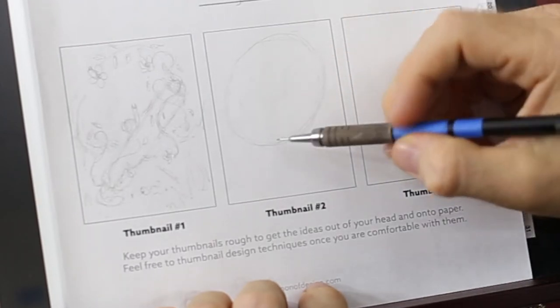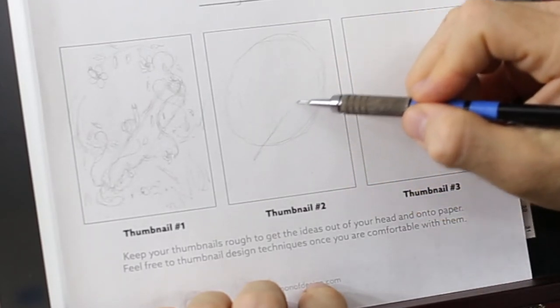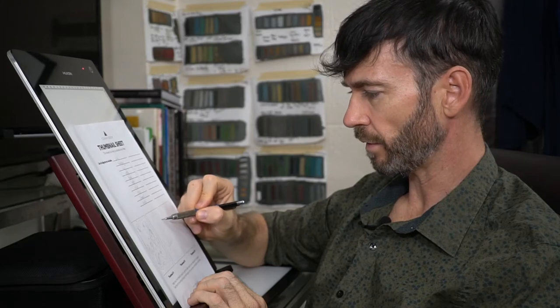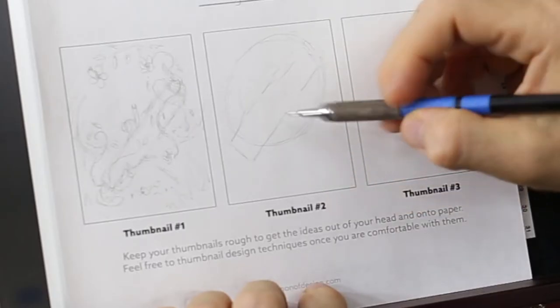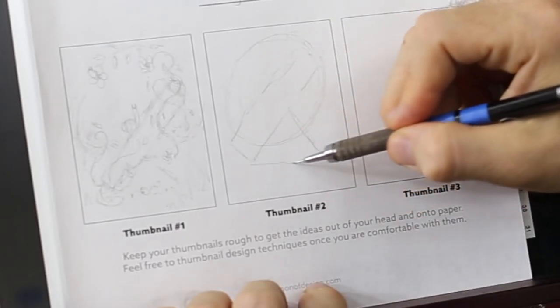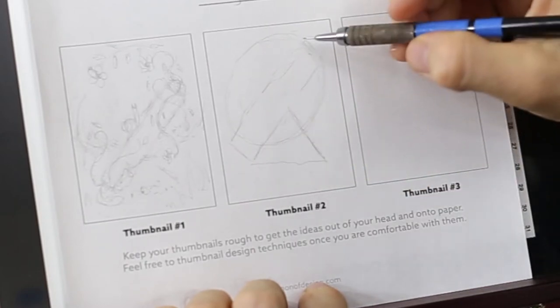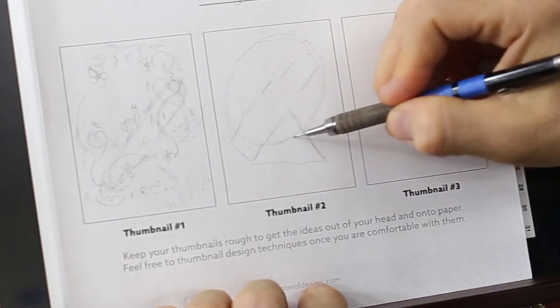We definitely have that dominant diagonal there, and then we can look for triangles. Maybe we want a triangle here so we can keep track of that.